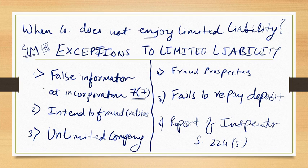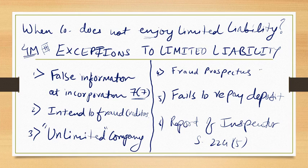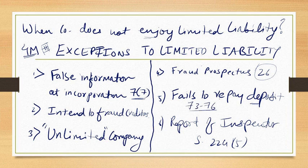This can come for a four-mark exam question, so please know the exceptions to limited liability. If your company is registered as an unlimited company, your liability is definitely unlimited. If there is fraud in the prospectus — for example, Section 26 matters to be mentioned — if you do not mention them, you will have unlimited liability. Also, if the company fails to repay deposits under Section 73 to 76, they cannot enjoy limited liability.